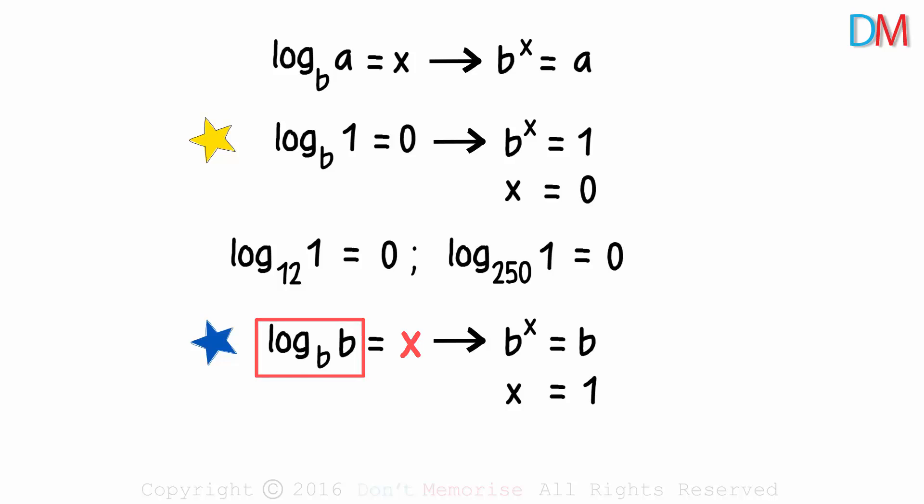The log of b to the base b will equal 1. If the argument and the base are the same, then the logarithm will be 1. For instance, the log of 4 to the base 4 will be equal to 1. That was the second property.